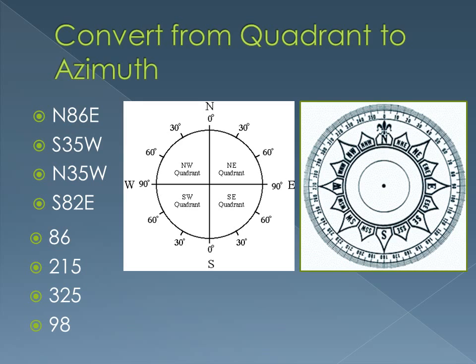And then south 82 east. Here we are at south; we went 82 degrees east. So we're at 98 degrees on the azimuth.